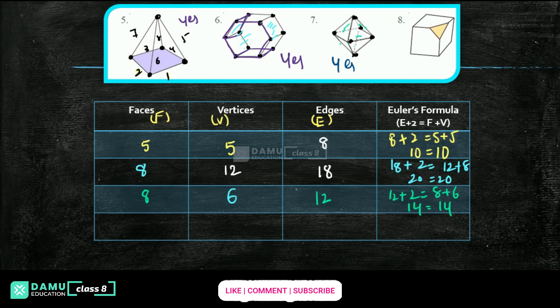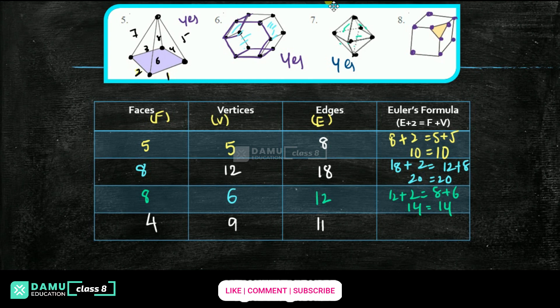Next one: how many vertices? Counting: top 3, down 3, middle 3 — so 3 plus 3 plus 3 = 9 vertices. Faces: 4 visible faces. Edges: here 3, here 3 = 6, inside 7, 8, 9, 10, 11 — so 11 edges. Euler's formula: 11 plus 2 = 13; 9 plus 4 = 13. Yes, it is also applicable for Euler's formula.